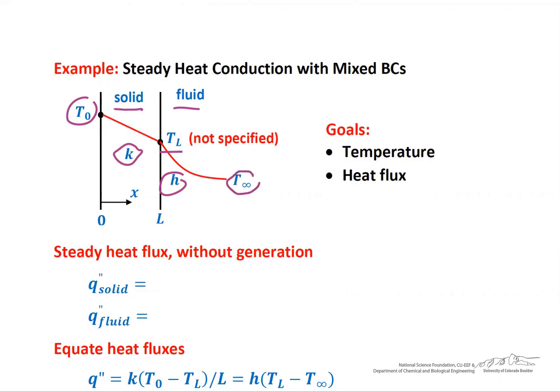The temperature is specified in the ambient fluid far from the wall. Our goals are: one, to find the temperature on the right-hand side of the wall at x equal L, and two, to find the heat flux Q double prime. At steady state with no generation, the heat flux through the solid equals the heat flux through the liquid. The solid heat flux is given by Fourier's law: minus K times dT/dx. If K is constant, we have a linear temperature profile, and the derivative gives us T0 minus TL over L.